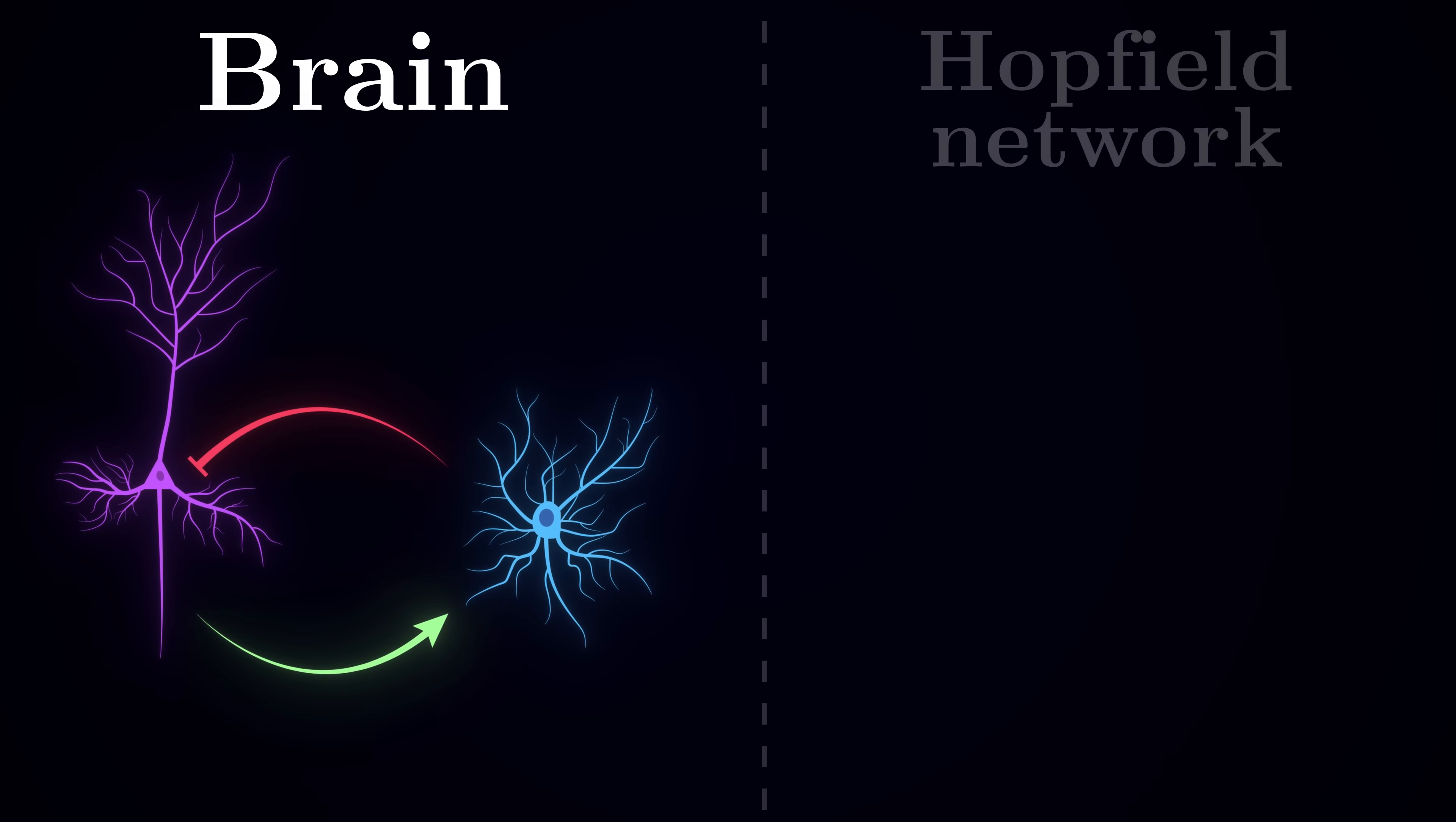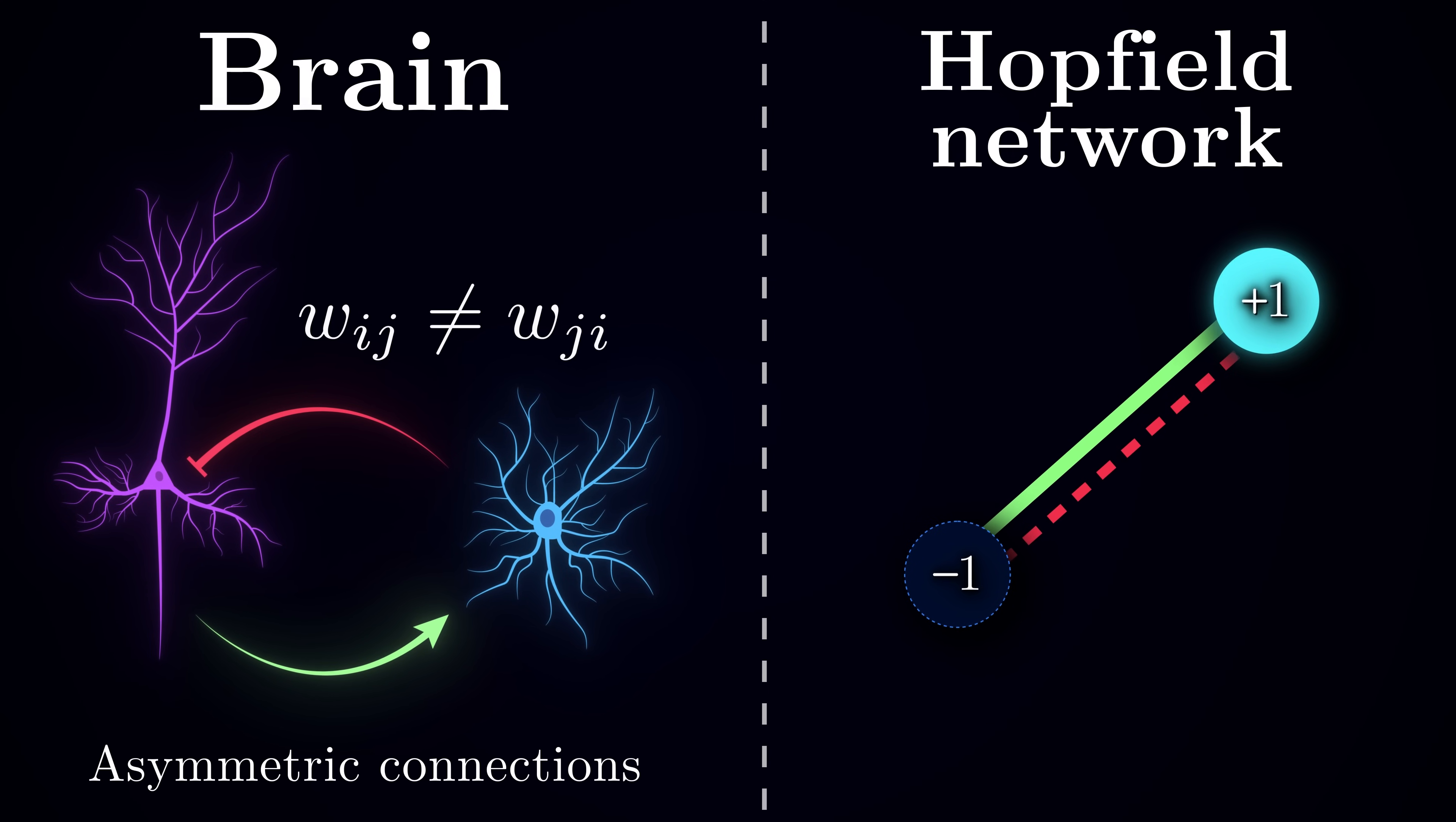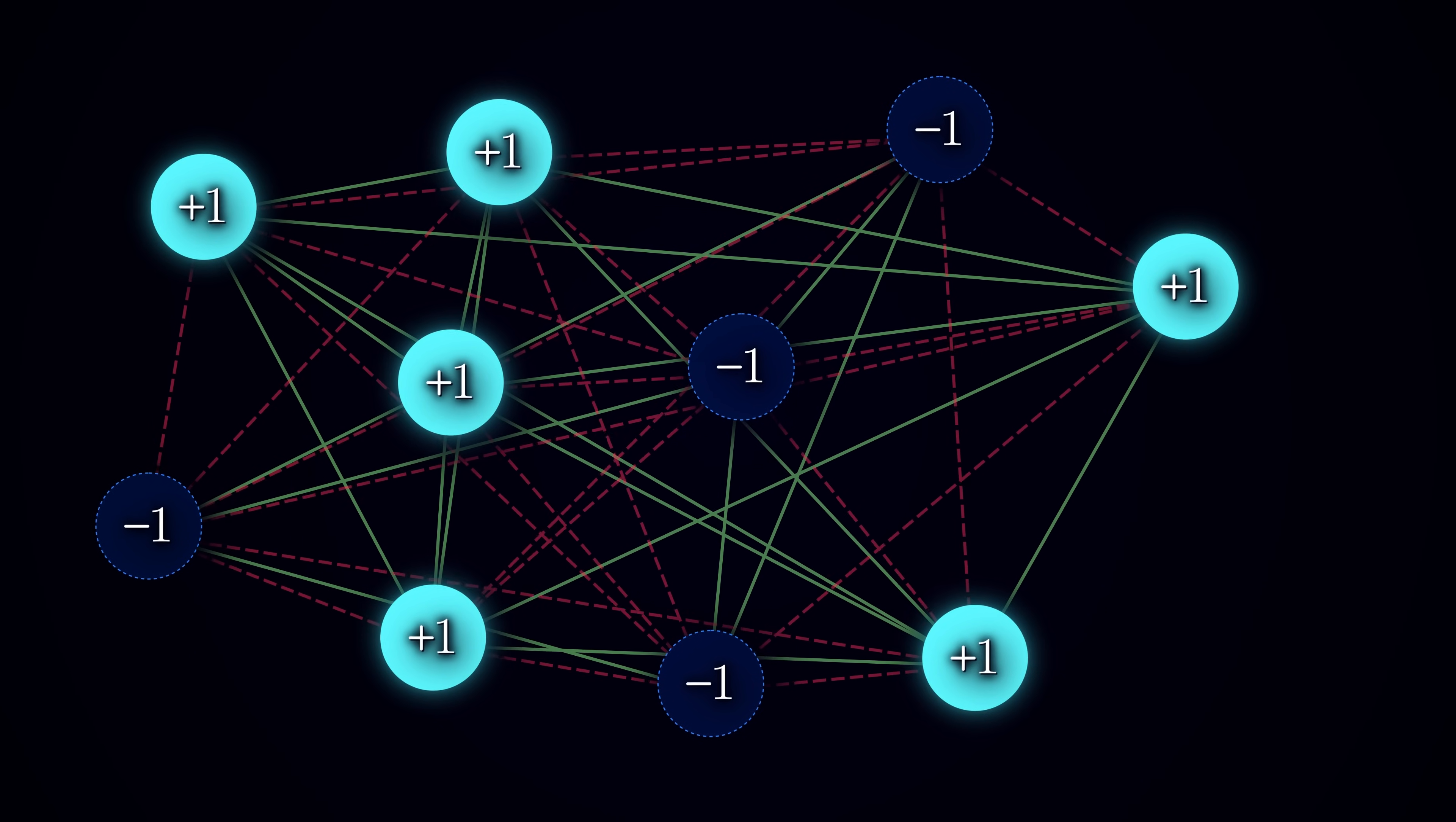In the brain, connections between neurons, or synapses, have a well-defined direction. A pair of neurons is connected asymmetrically, meaning that the synapse from neuron A to neuron B is physiologically separate from the synapse that connects B to A, if that one exists at all, and so they can have different weights. While we could generalize a Hopfield network to account for asymmetric connections, it would introduce complications and potentially unstable behavior. For simplicity, here we will stick to the original formulation of the Hopfield network, which assumes symmetric weights.